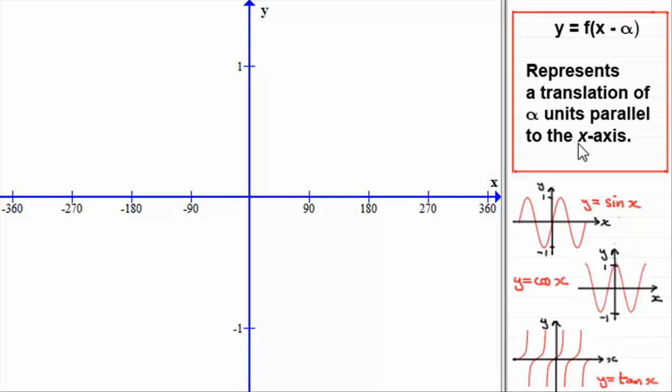In this tutorial, we're going to look at the transformation y equals f of x minus alpha, which represents a translation of alpha units parallel to the x-axis, where alpha is a positive or negative constant.